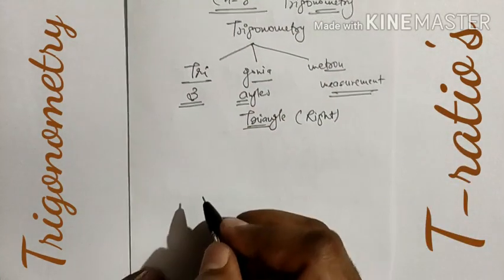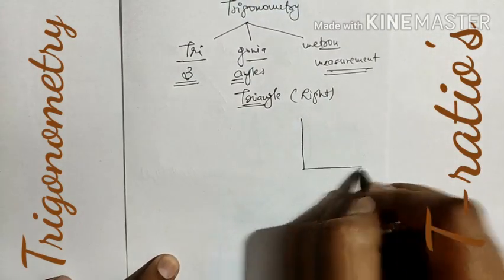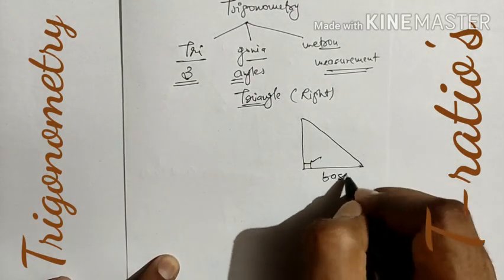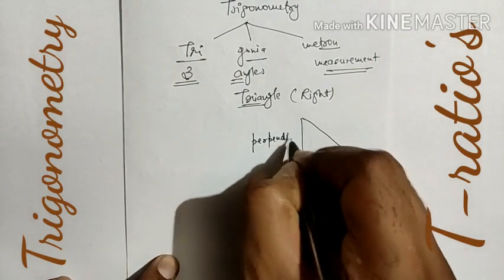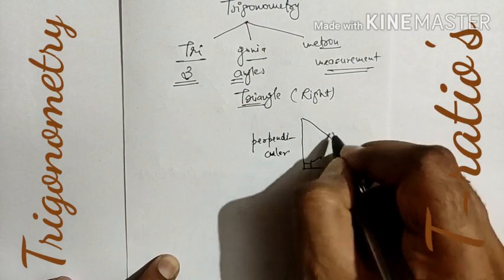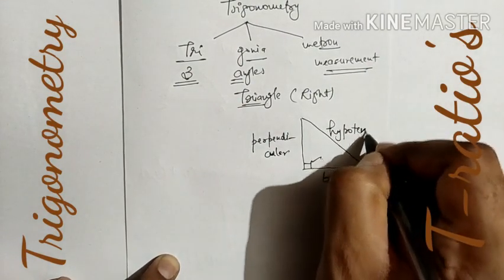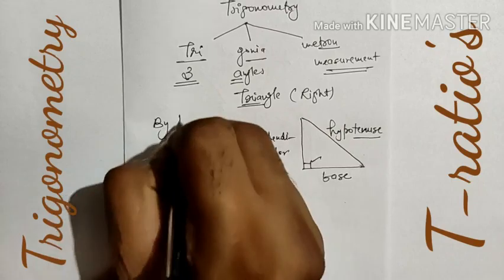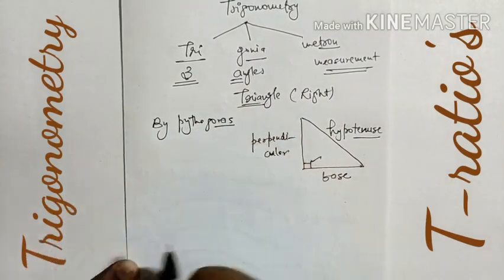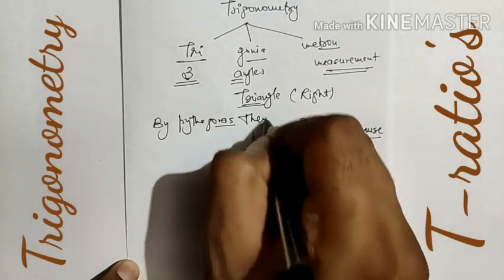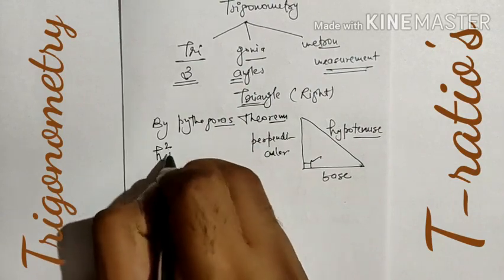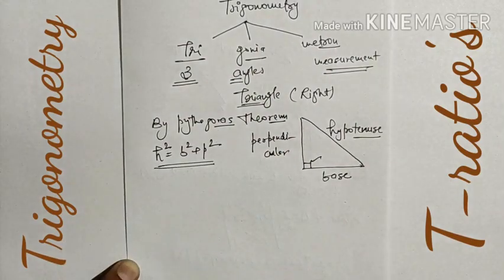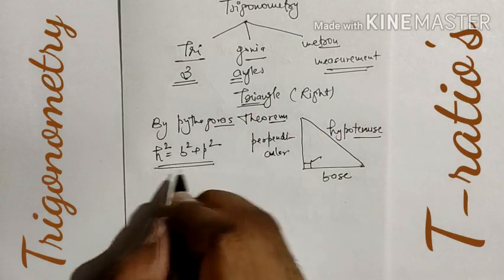In a right angle triangle there are three sides. The sides which contain 90 degrees — one of them is known as base, another is known as perpendicular, and the third and longest side is known as hypotenuse. There is also a result given by Pythagoras: the square of the hypotenuse equals the square of the base plus the square of the perpendicular.